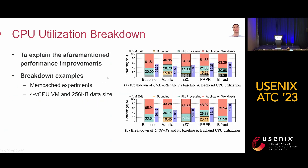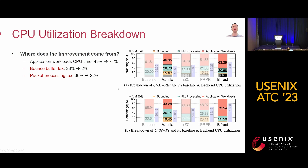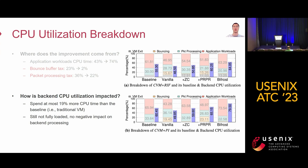To explain the performance improvements, we further break down CPU utilization using memcached as an example. The application workload CPU time is largely increased from 43% to 74%, due to large decreases in both bounce buffer tax and packet processing tax. As for backend CPU utilization impacted by PRPR, BFrost spends at most 19% more CPU time than the baseline on the backend, but the backend CPU is still not fully loaded, so there is no negative impact on backend processing.